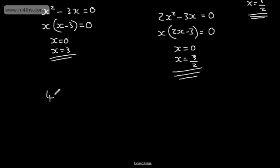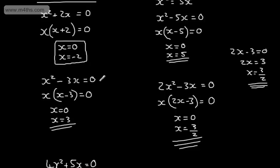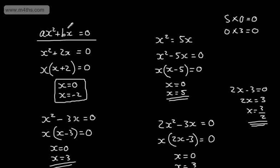Let's do 4x squared plus 5x is equal to zero. The common factor is x, so taking x out leaves 4x plus 5 equal to zero. So x is equal to zero, or 4x plus 5 is equal to zero, which means x equals minus 5 over 4. We're simply solving quadratic equations in the form ax squared plus bx equals zero by factoring into a single bracket and then solving.